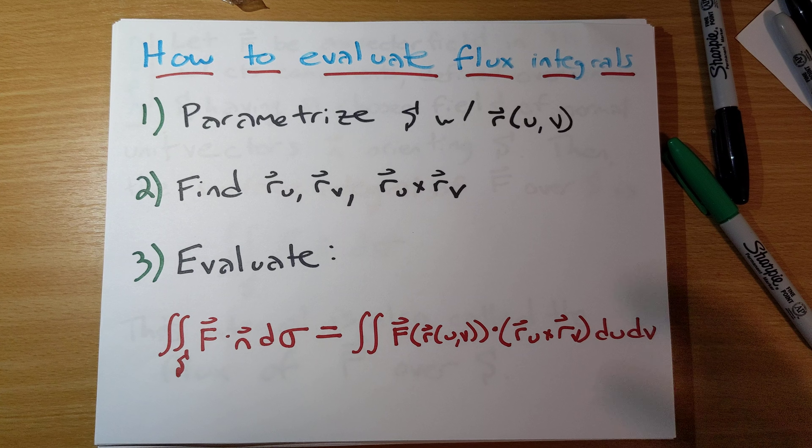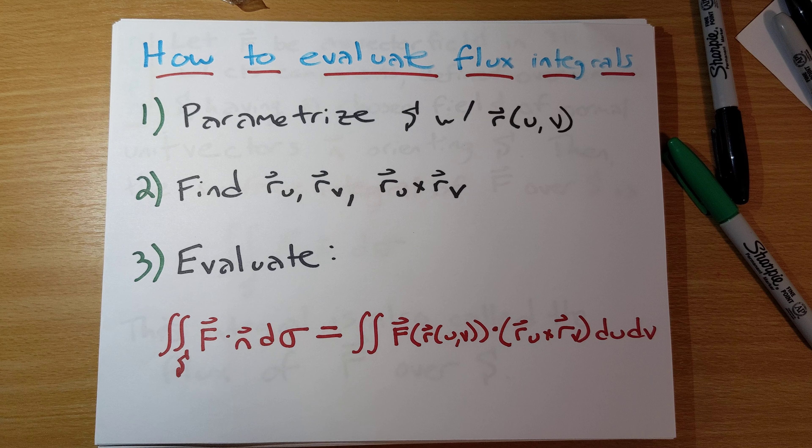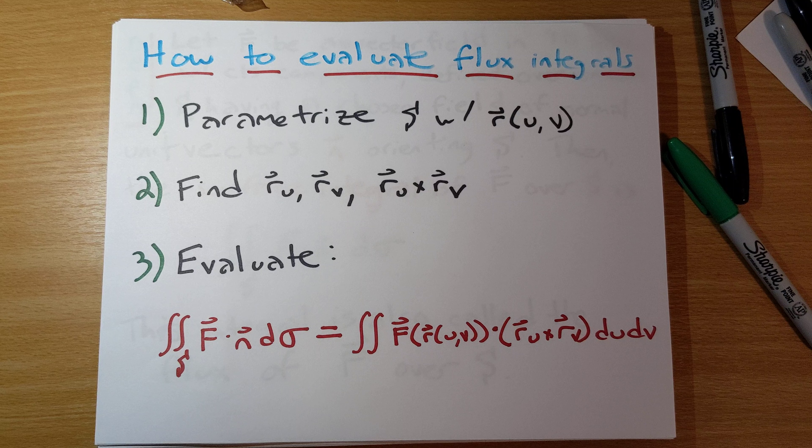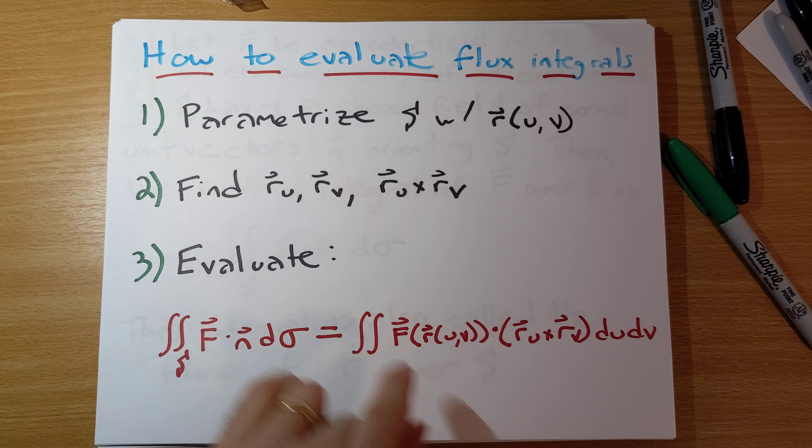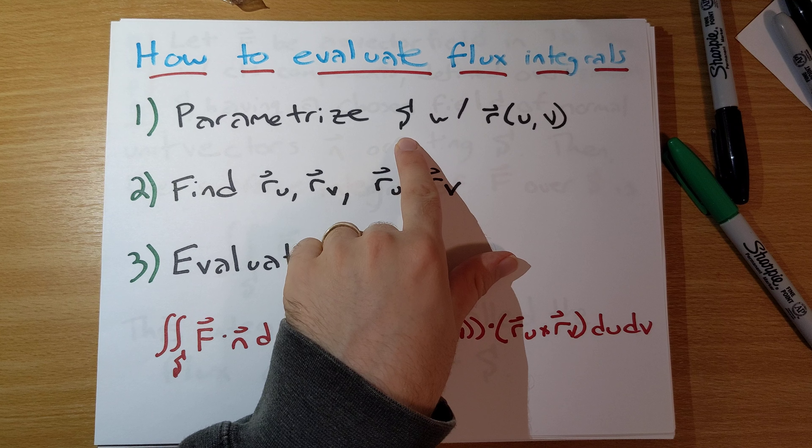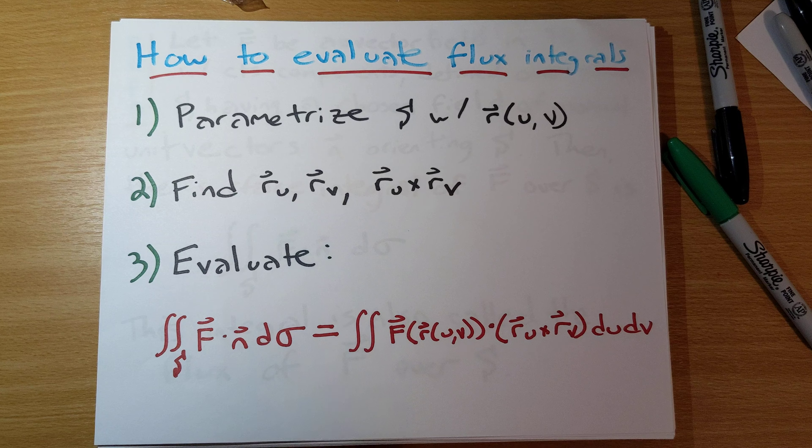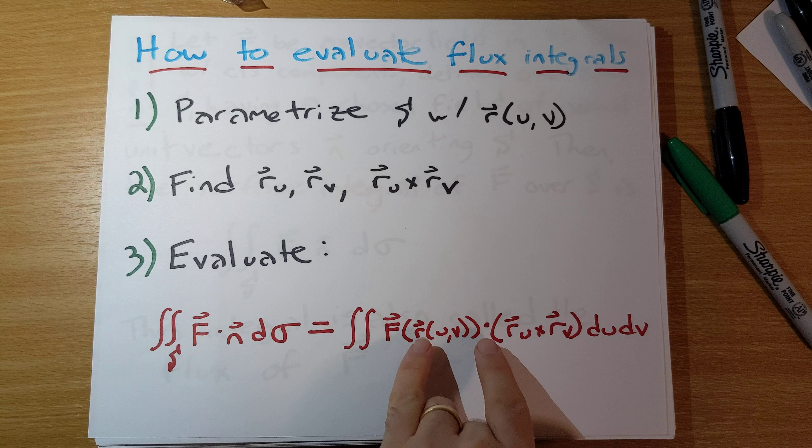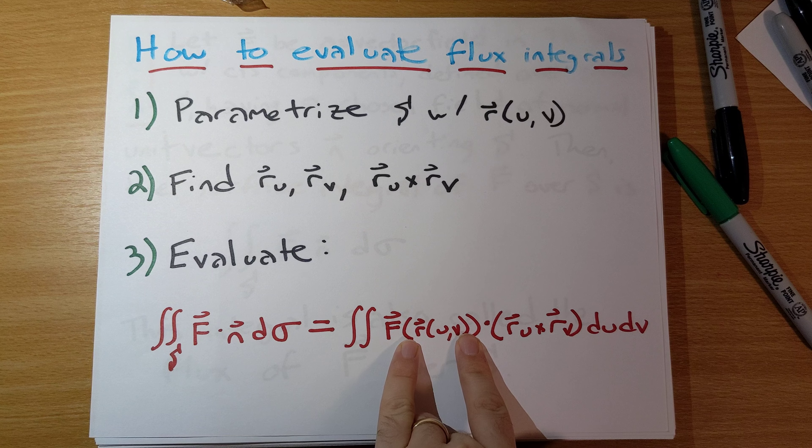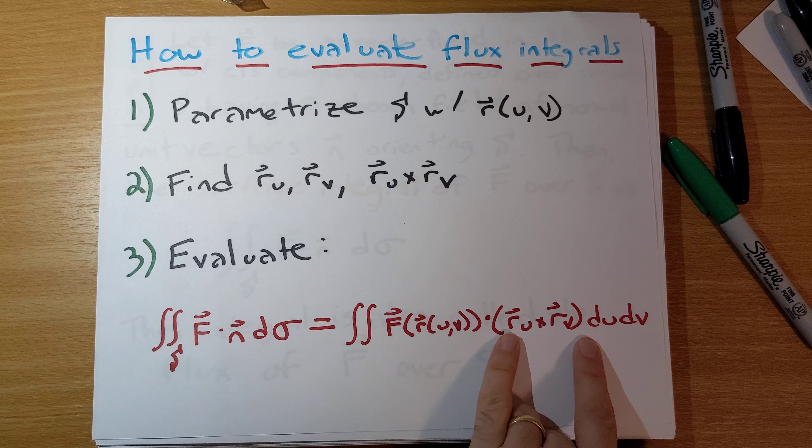I want to show how you compute them. This is going to be our algorithm for how to evaluate flux integrals, vector surface integrals. First, you need to parametrize your surface S with some parametrization. Find r_u, find r_v, find the cross product of those, and then evaluate your flux integral by substituting in your parametrization to F and then taking the dot product of this with r_u cross r_v that you found before.